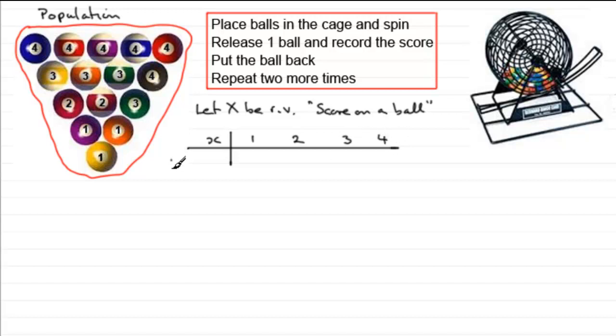Then we can look at the probability that our random variable X equals that particular score. So for a score of 1, you can see that we've got three balls with a score of 1 on, so that's going to be 3 out of 15.